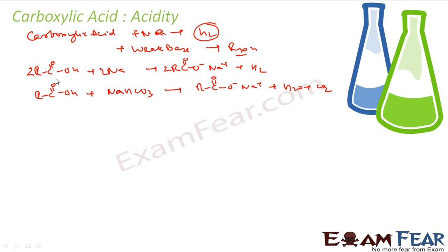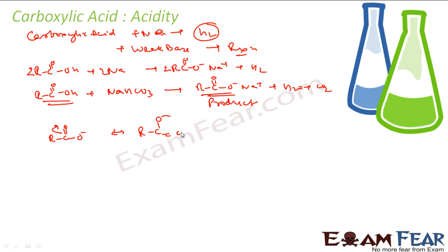If you compare the reactant and the product, the product is seen to be more stable. If you see RCOO⁻, it has one more resonating structure — so it is resonance stabilized. The product is more stable, meaning the reaction moves in the forward direction. That means RCOOH is reactive and it is acidic.